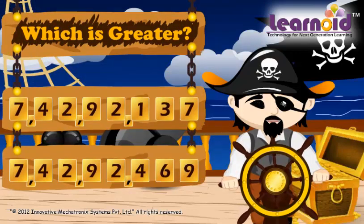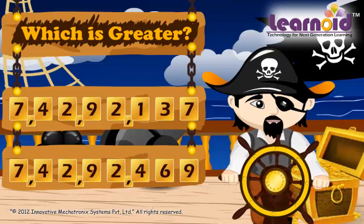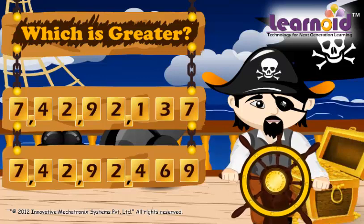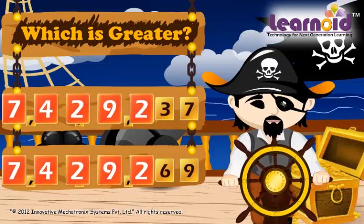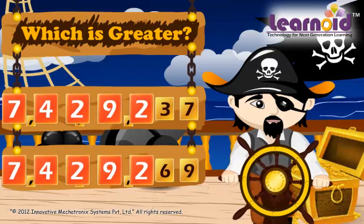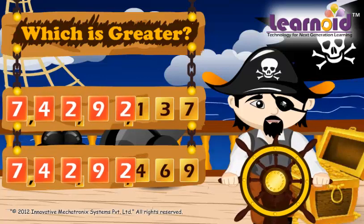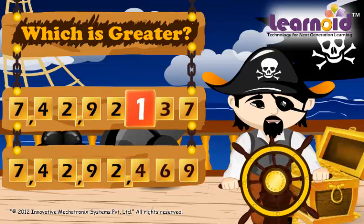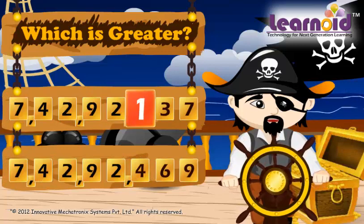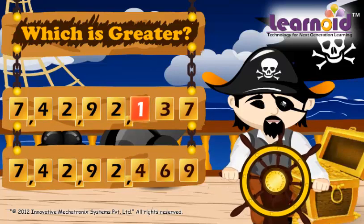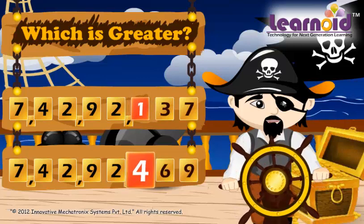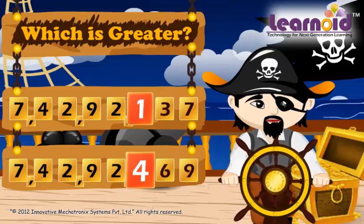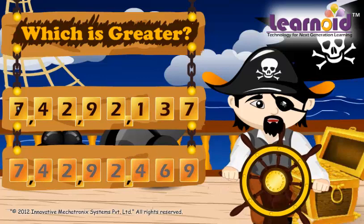Which number is greater? To compare which number is greater, let's check from the left side. Here, the first five digits are the same in both the numbers. But here, the sixth digit is 1 and here it is 4. 4 is greater than 1.